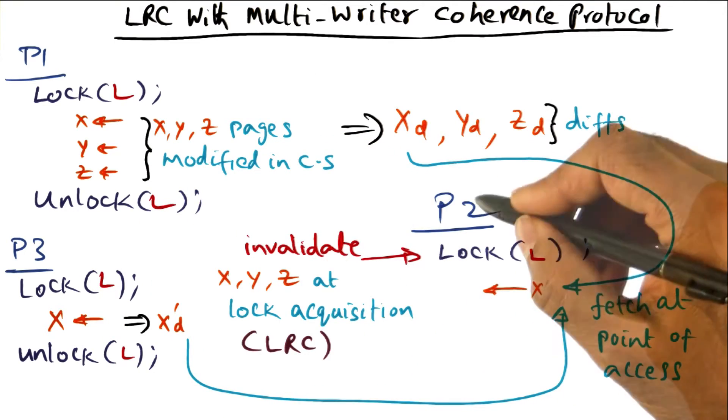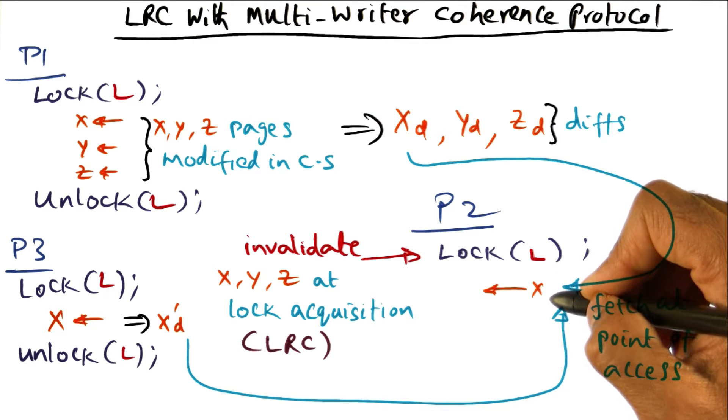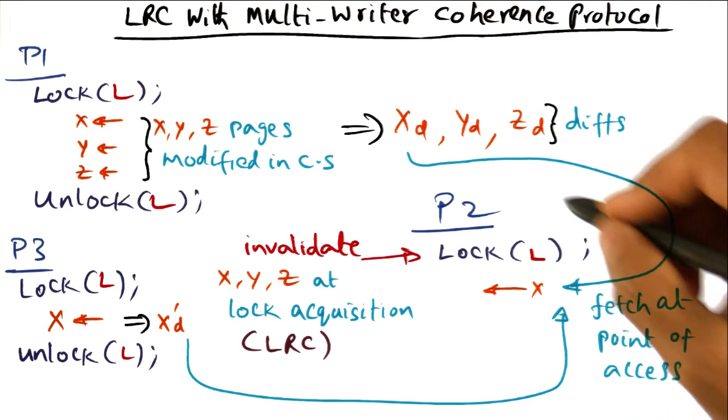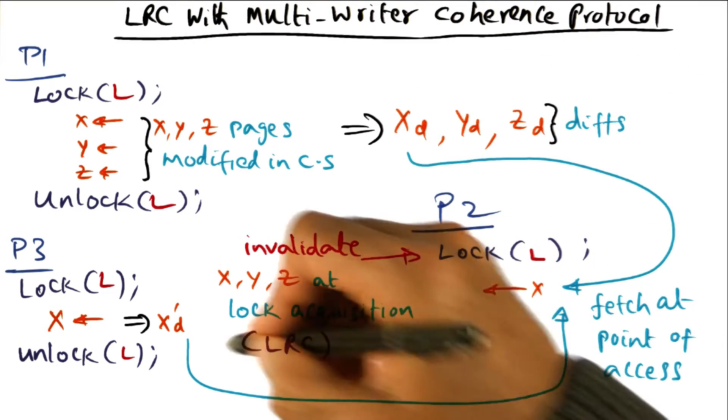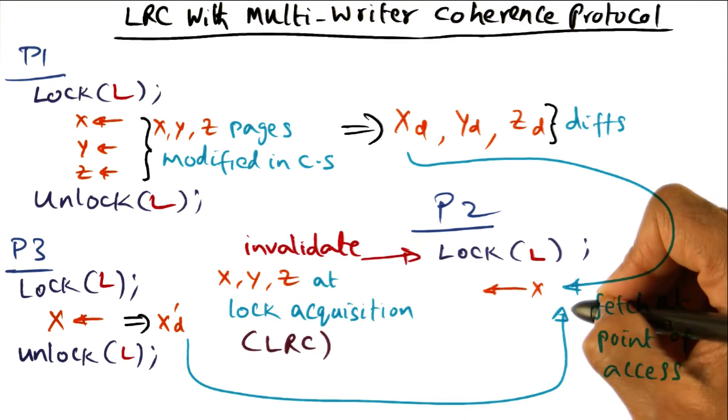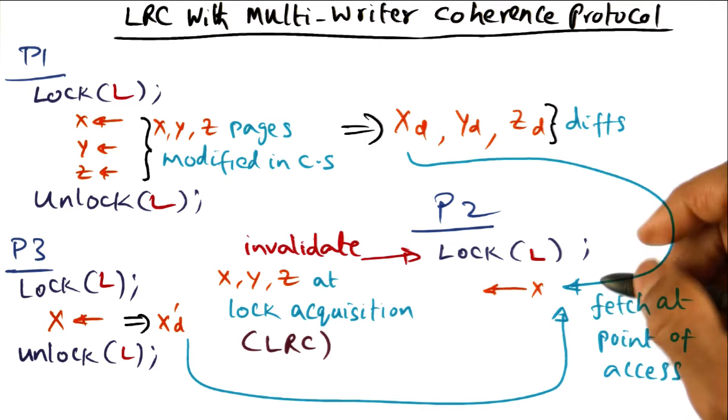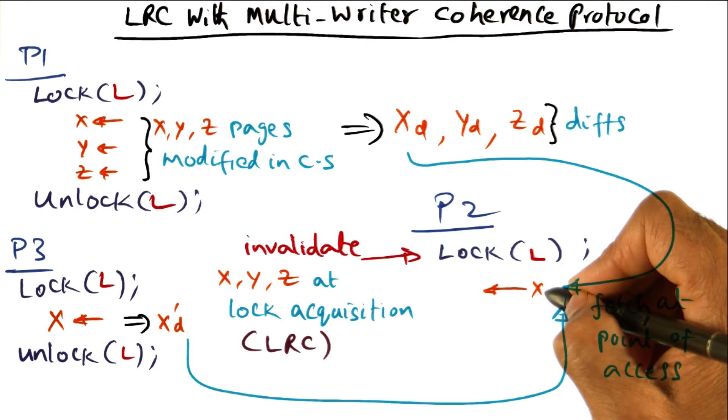And therefore, when processor P2 tries to access x, the DSM software has not only to get the diff from P1, but it also needs to get the diff from P2 and apply it to the original, pristine version of the page, that is with the owner of the page, so that it can create the current version of the page.